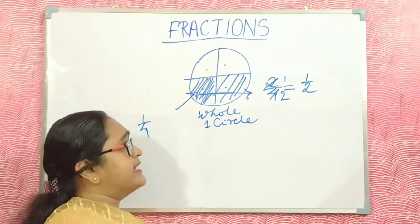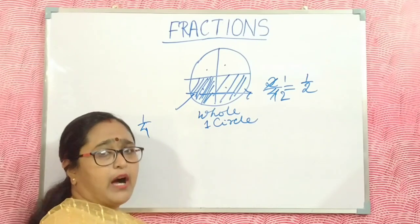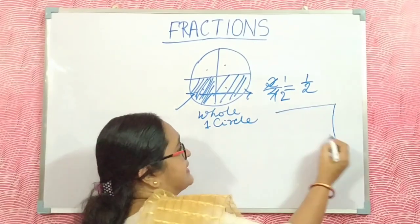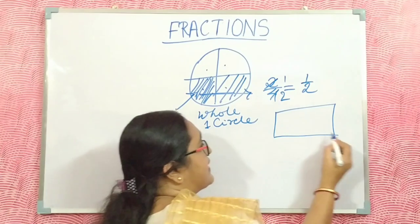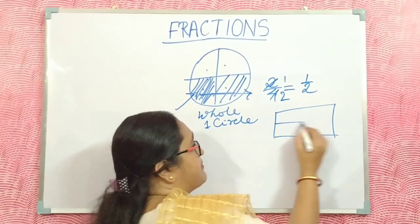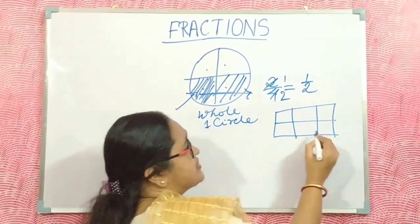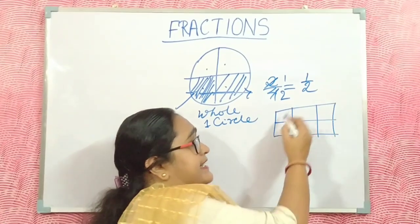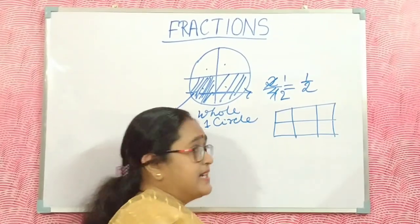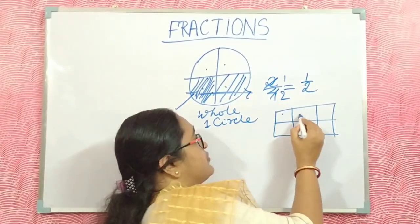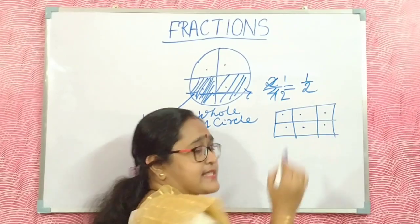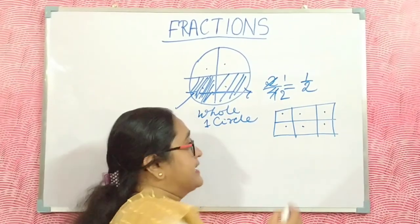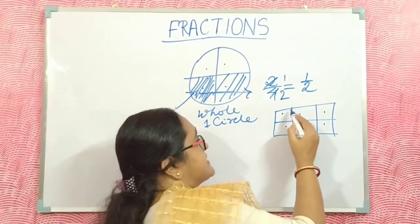Two-fourth, if you cancel, becomes half. Now I give another example. I take a whole rectangle and divide it into six parts — one, two, three, four, five, six.